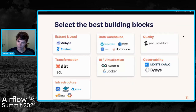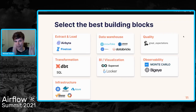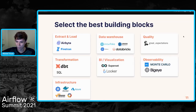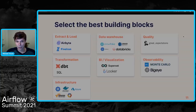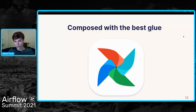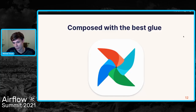What we've seen recently is companies picking the best of breed for every one of their data functions. For extract and load, they can use Airbyte. For data warehouse, they can pick Snowflake or BigQuery. For quality and transformation, they pick whatever serves their needs best. And for BI and visualization consumption, same thing. You assemble these building blocks using something like Airflow as your DAG manager, which becomes the backbone of your data stack.